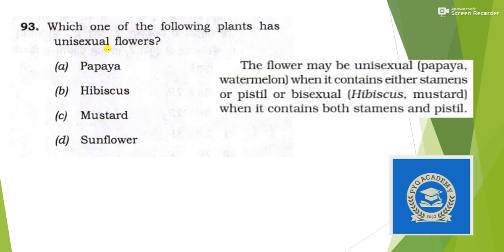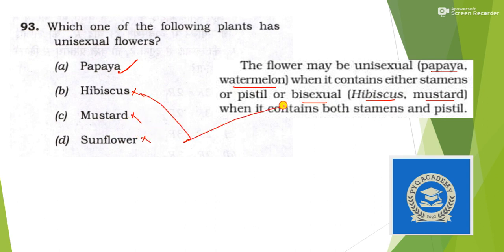Next: which one of the following plants has unisexual flowers? Again directly from NCERT. The flower may be unisexual — examples are papaya and watermelon. Bisexual flowers contain both stamens and pistils — examples are hibiscus and mustard. We have to find unisexual, so papaya is unisexual. Hibiscus, mustard, and sunflower are bisexual.